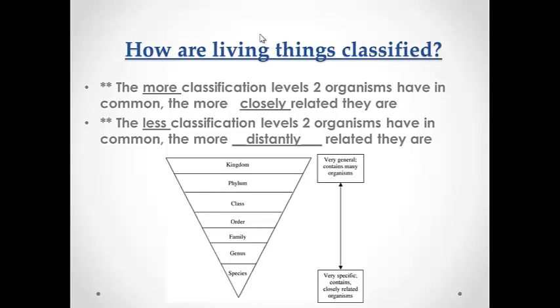The more classification levels two organisms have in common, the more closely related they are. We said this on the first slide earlier when we were talking about the cladogram. The less classification levels two organisms have in common, the more distantly related they are.